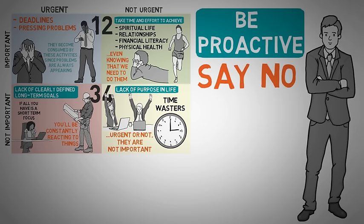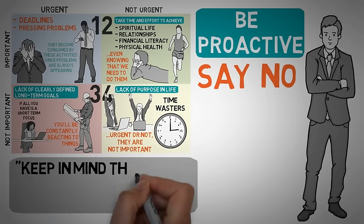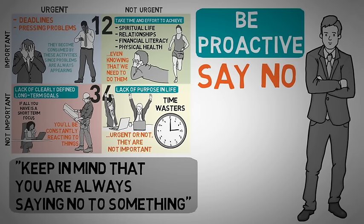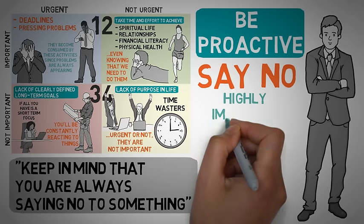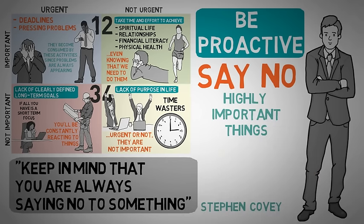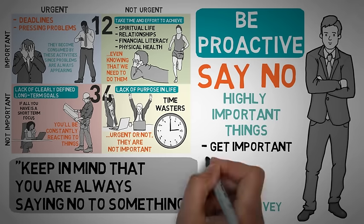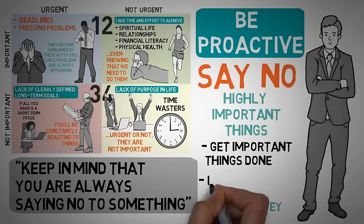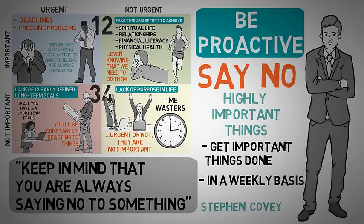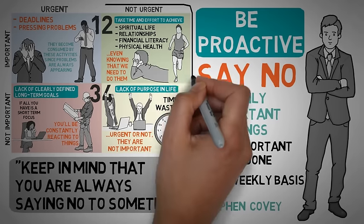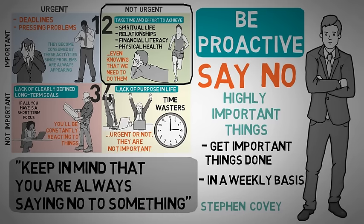Keep in mind that you're always saying no to something, wrote Stephen Covey. If it isn't to the apparent urgent things in your life, it is probably to the more fundamental, highly important things. Being effective is managing to get these important things done. Organizing your goals for the week ahead gives you a broader view compared with daily planning, and making your goals more quadrant two focused will help you manage your time effectively.